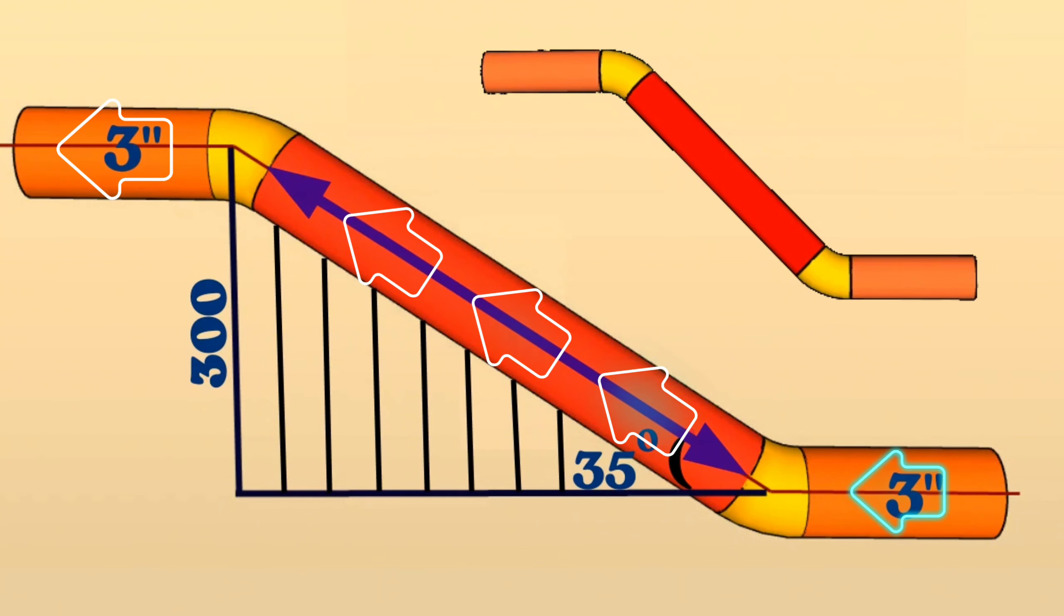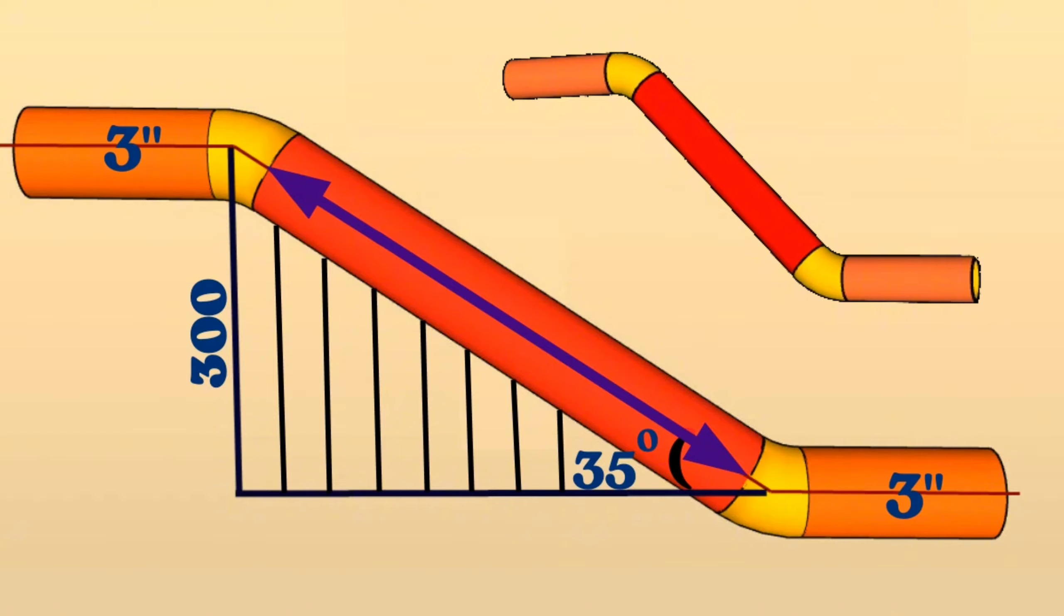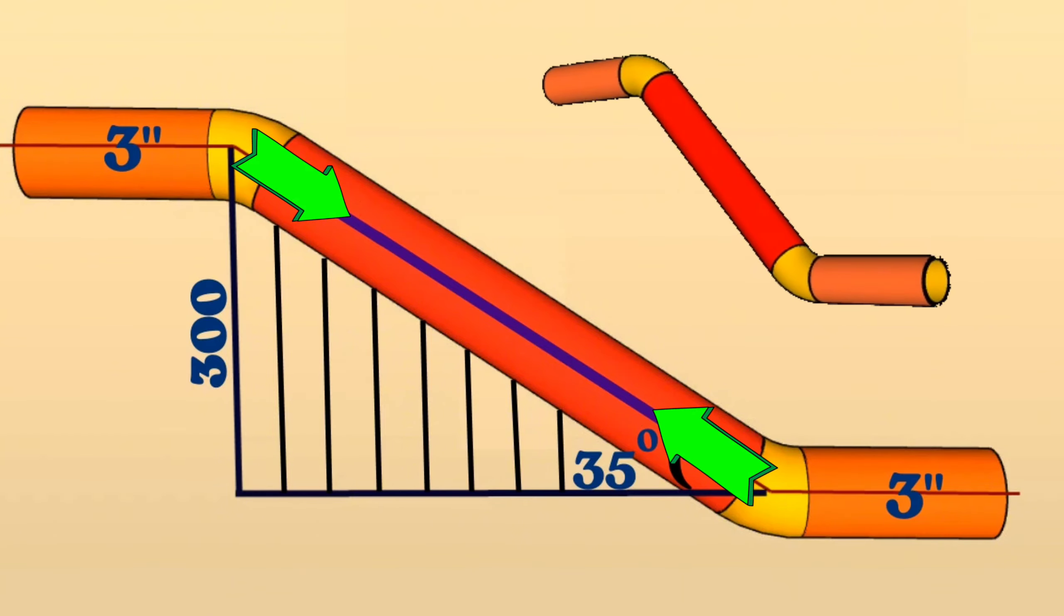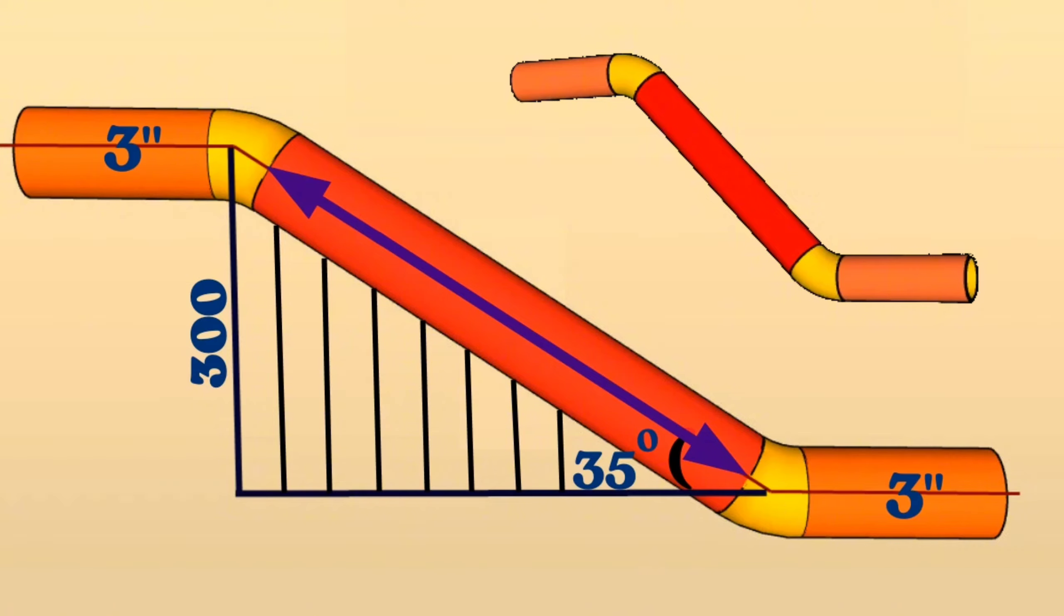To find the length of the red pipe piece, we first need to calculate the distance between the centers of the pipe elbows, then we can find the length of the red color pipe by subtracting the lengths of these two elbows and two gaps for welding from the total length.